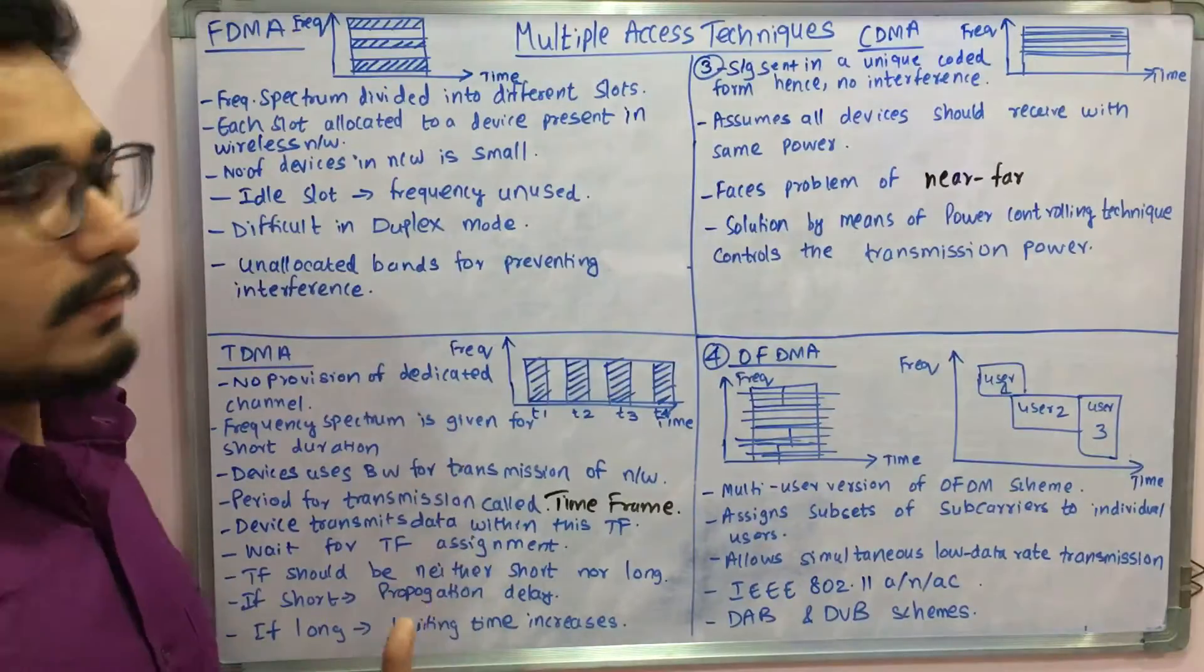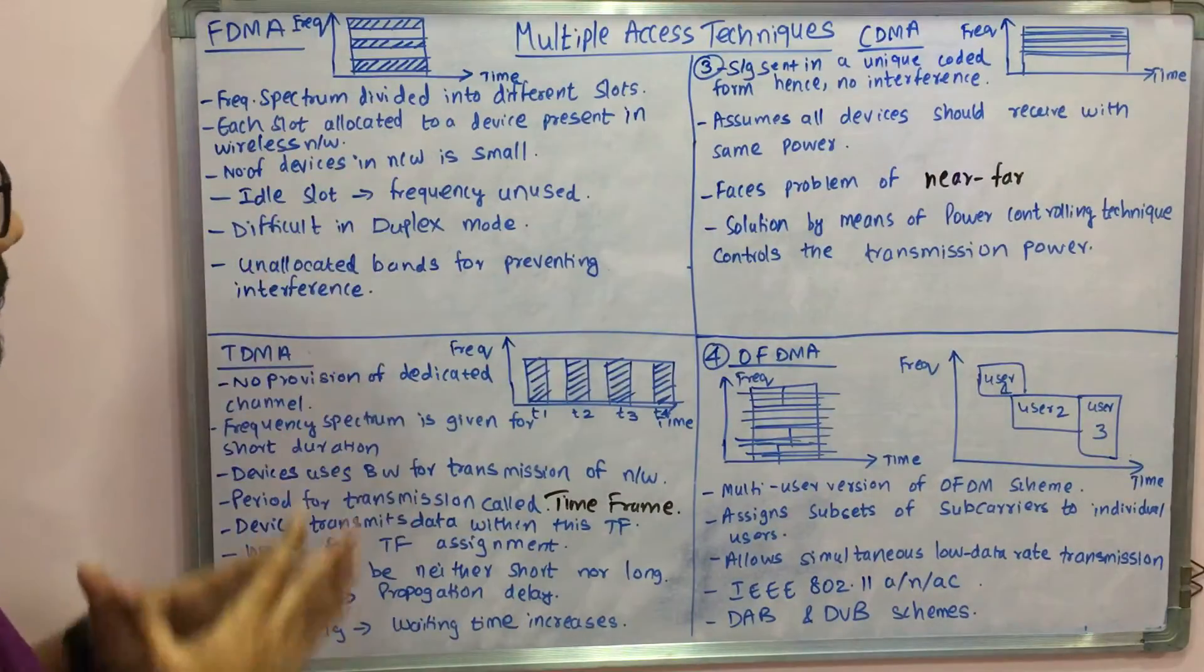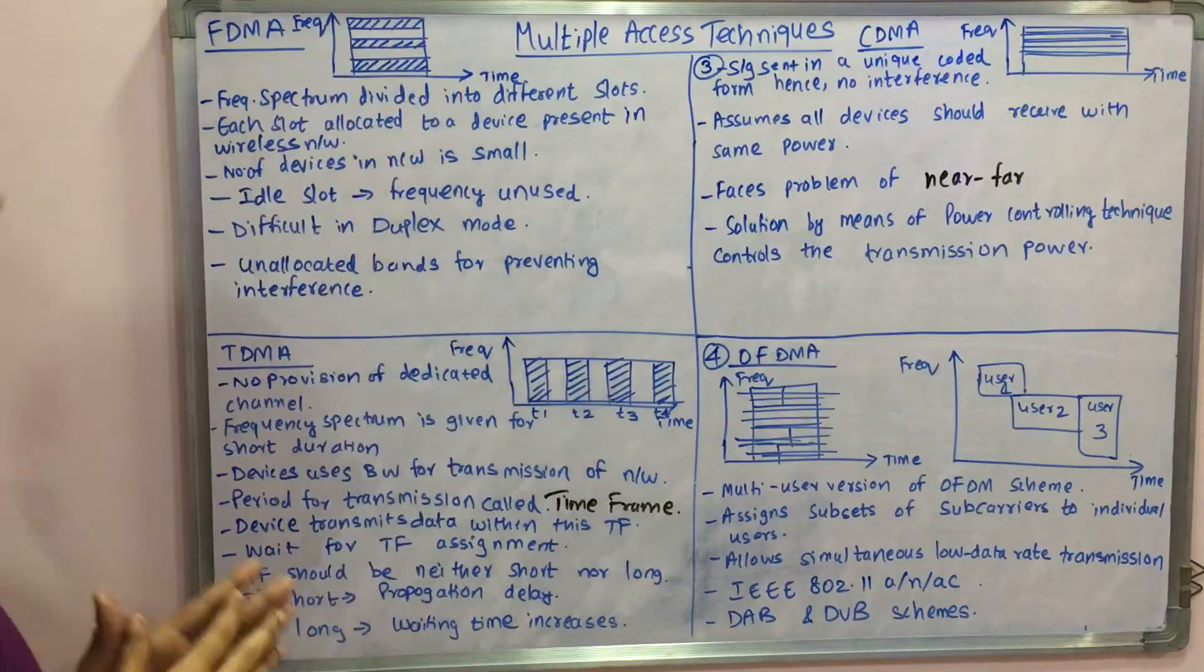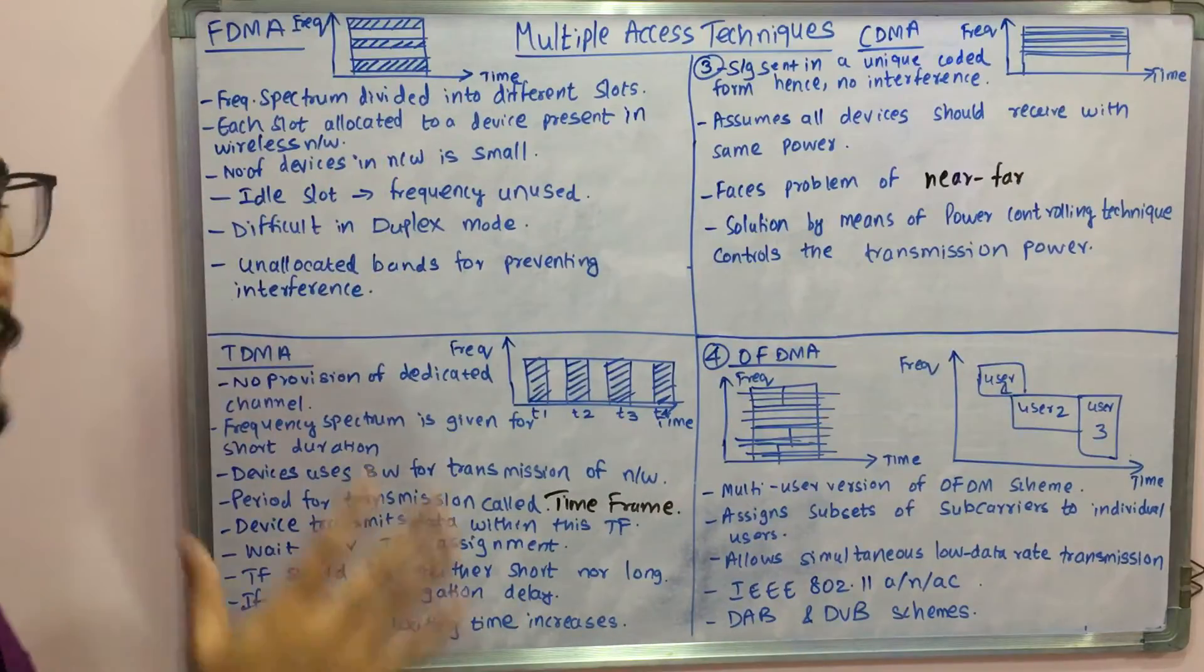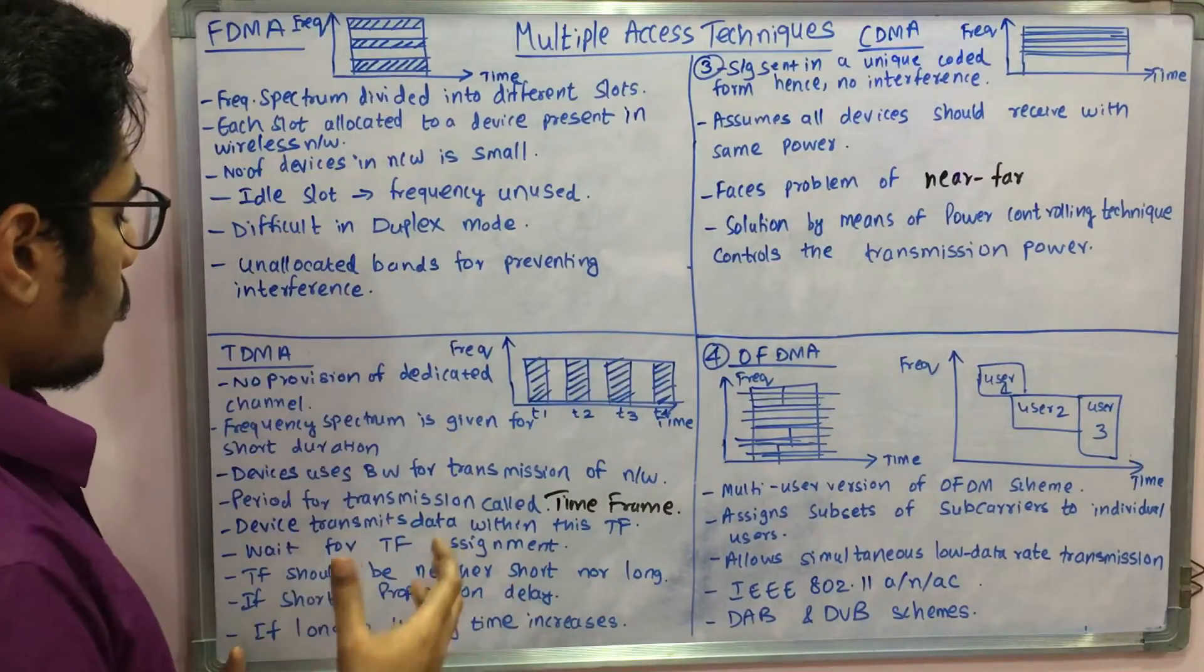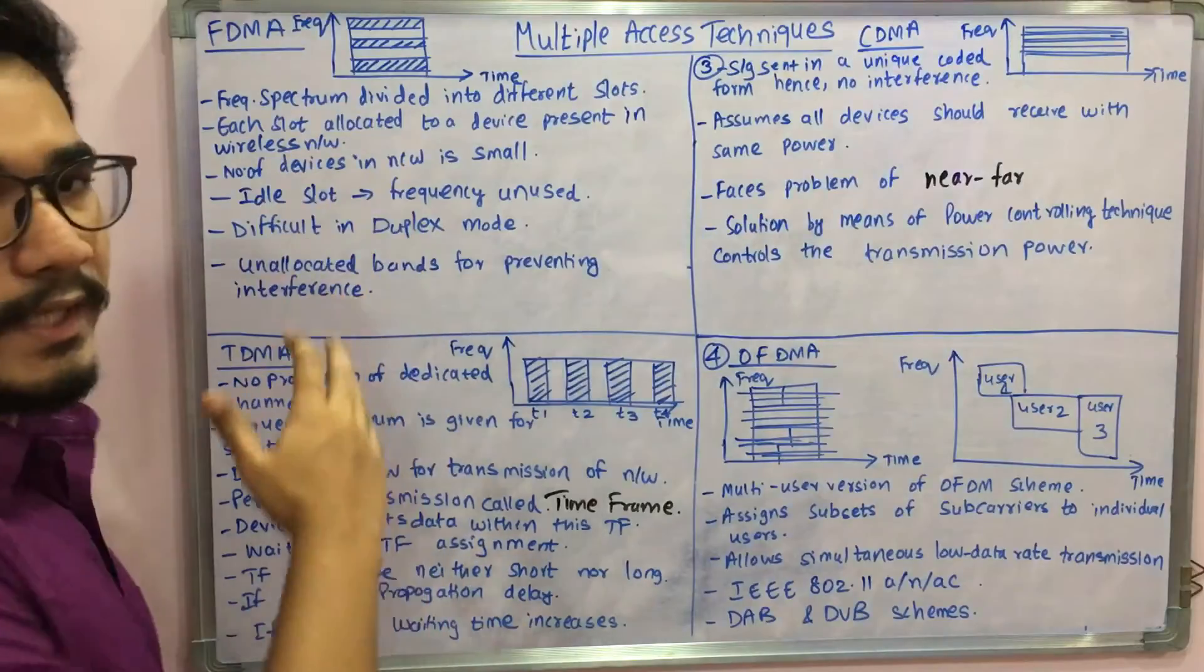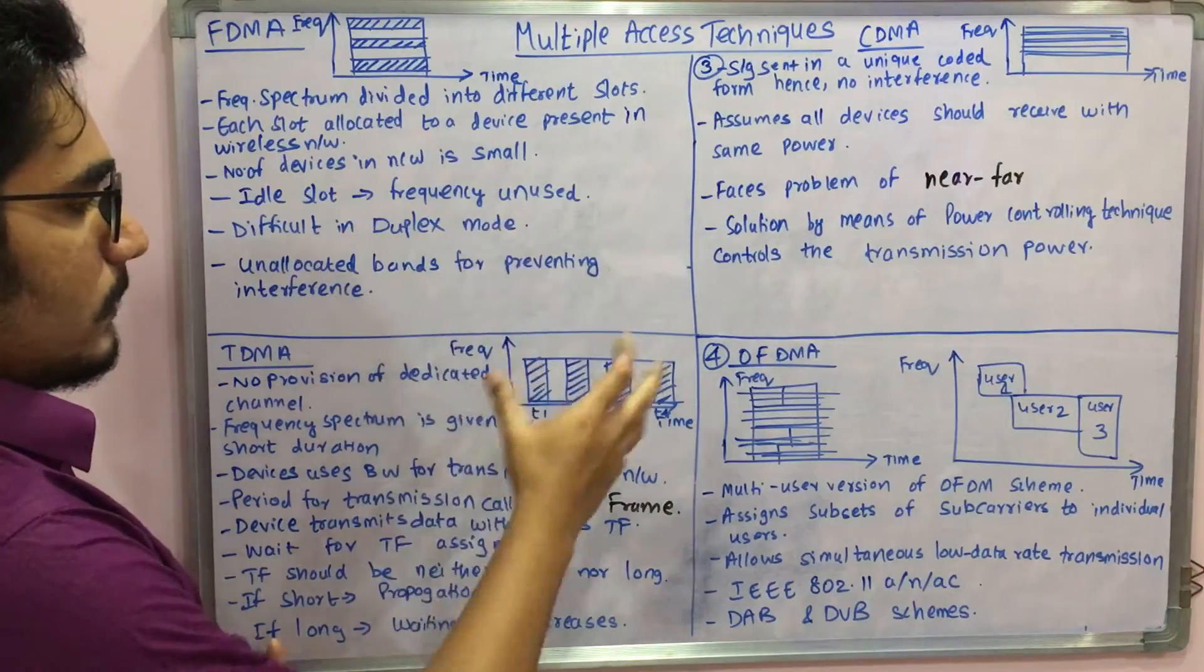In order to overcome this limitation of this band unallocation, we have time division multiple access, TDMA. Here, we have no provision of any dedicated channel as such. We don't divide the frequency; instead we put the devices into different time frames.